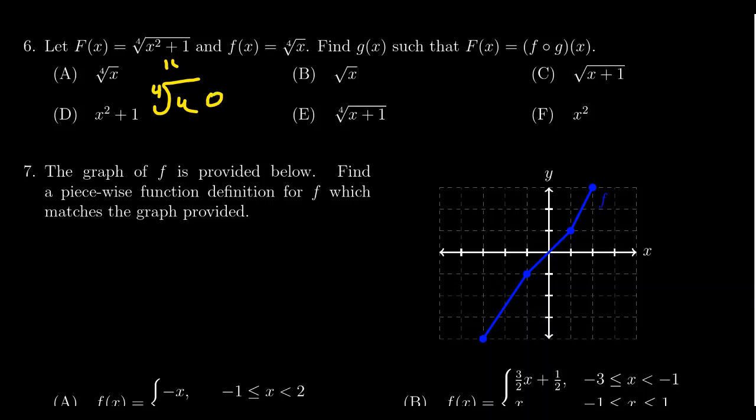Well the answer is going to be x squared plus one. That is, x squared plus one is the thing we put inside of the fourth root to construct the function capital F, and that would indicate to us that g of x should be x squared plus one, which would be option d.